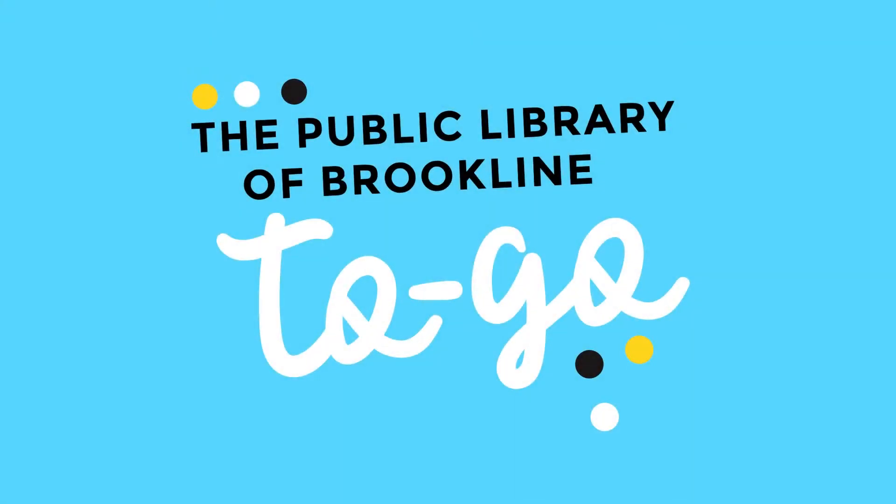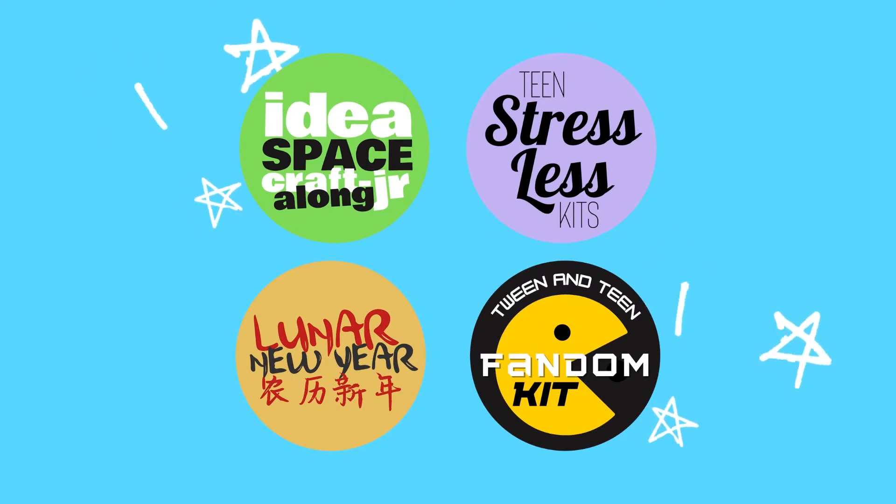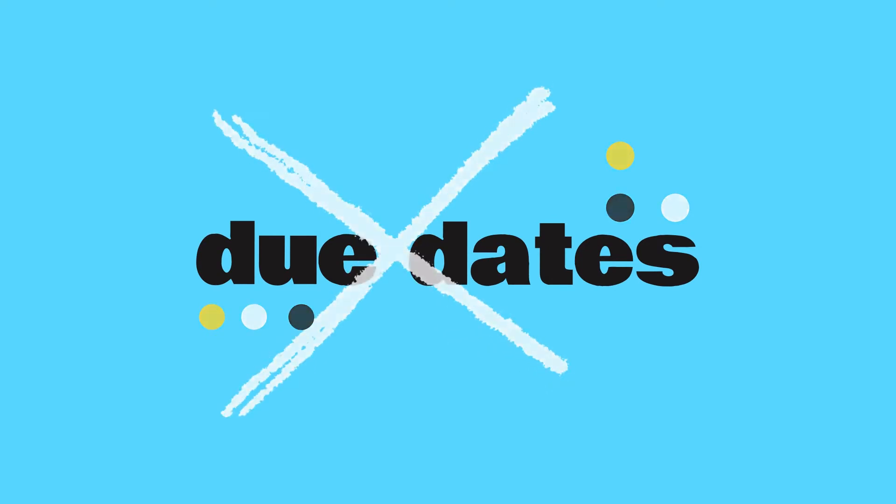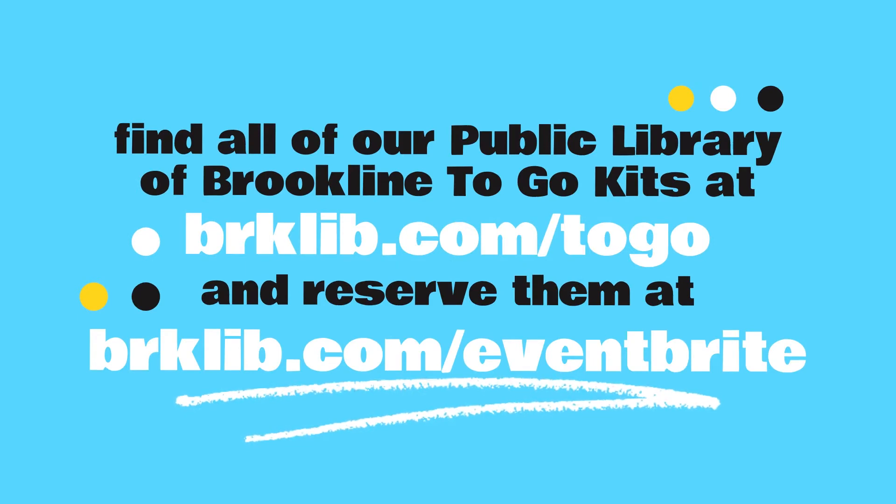Is this your first Public Library of Brookline to-go program? Here's how it works. Each month the library is offering new take-home program kits complete with everything you need to follow along with video or written instructions created by one of your local librarians. The best part? Absolutely no due dates. You can keep everything included in your kit. Visit brklib.com/togo for a full list of our current kit offerings and follow the link there, or visit brklib.com/eventbrite to reserve yours for free pickup at any library location.